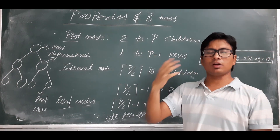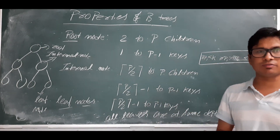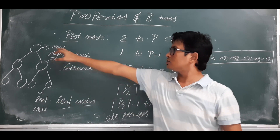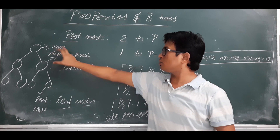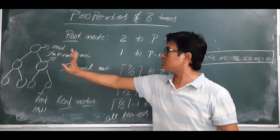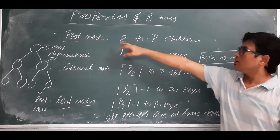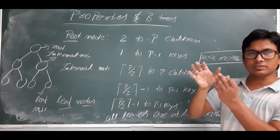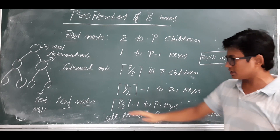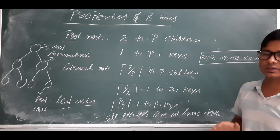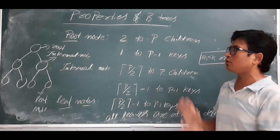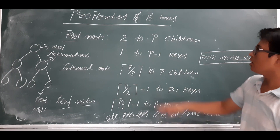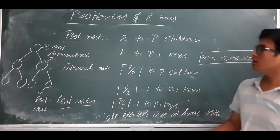Whenever we call it a tree, we have three types of nodes: the root node, the internal nodes, and leaf nodes. If we exclude root and leaf nodes, all other nodes are called internal nodes. We have properties for each: root node has some properties, internal nodes have some properties, and leaf nodes have some properties. Each node in B-trees must follow certain properties.